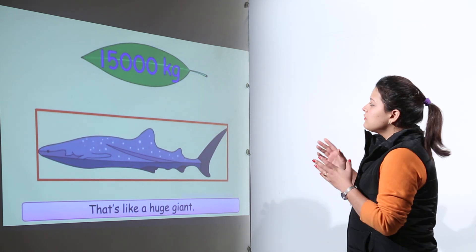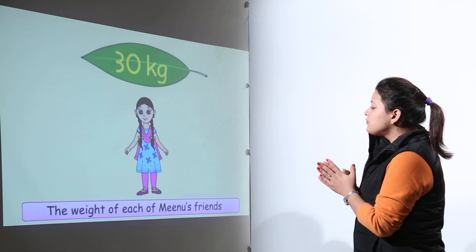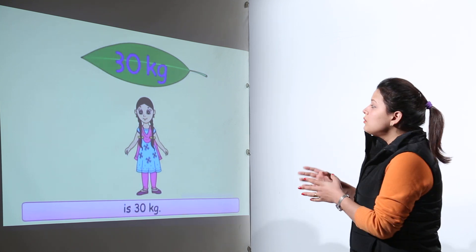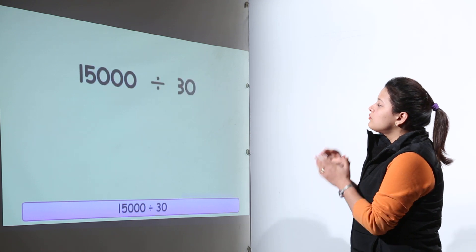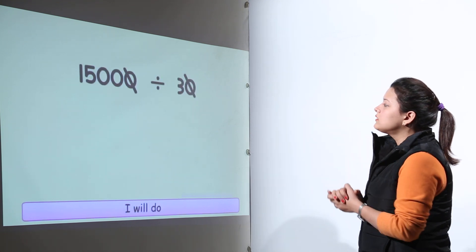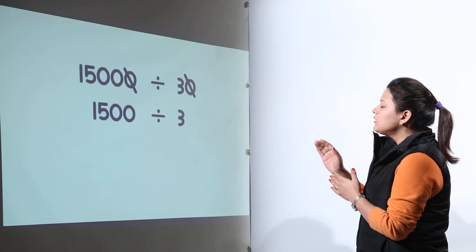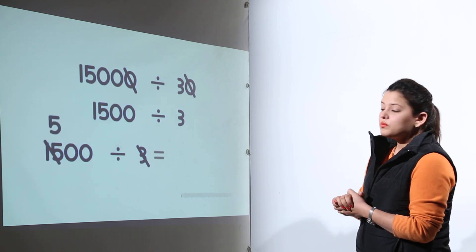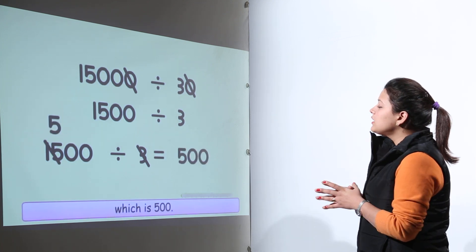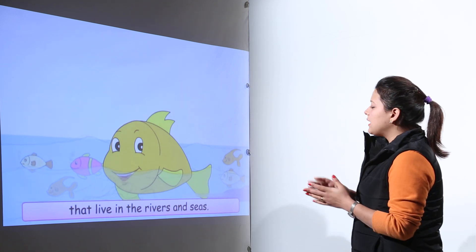Consider if a whale weighs 15,000 kg, how many of Meenu's friends will be required to balance it when each friend weighs 30 kg? 15,000 divided by 30 gives us 1,500, again divided by 3 gives us 500. So you will find that 500 of Meenu's friends, each weighing 30 kg, will be required to balance that out.